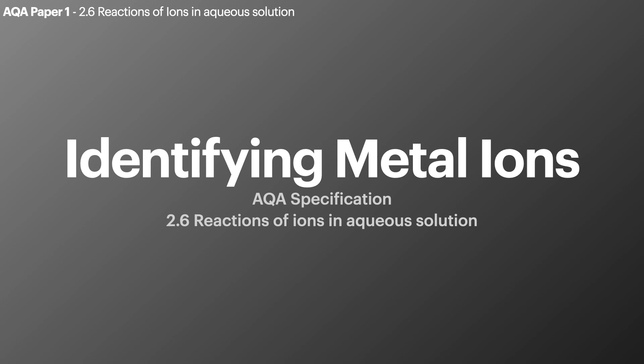Hello chemists and welcome back to another episode of Bale's Chemistry. In this episode we're going to look at identifying metal ions. This is 2.6 of the AQA A-level chemistry specification and it's on paper one of your final exams.